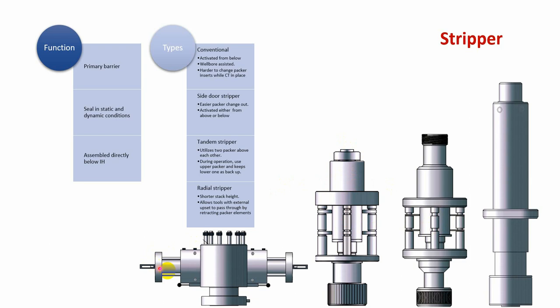Finally, we have the radial stripper. The radial stripper allows for a short equipment stack, which is especially useful offshore where there are height limitations. It also allows external tools to pass through it because the packing element can be retracted to allow full-bore access. This stripper is the primary barrier and allows sealing around the coiltube in both static and dynamic positions.